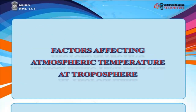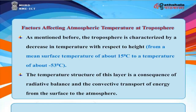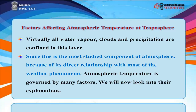Factors Affecting Atmospheric Temperature at the Troposphere. The troposphere is characterized by a decrease in temperature with height, from a mean surface temperature of about 15 degrees centigrade to about minus 53 degrees centigrade. The temperature structure is a consequence of radiative balance and convective transport of energy from the surface to the atmosphere. Virtually all water vapor, clouds, and precipitation are confined in this layer.